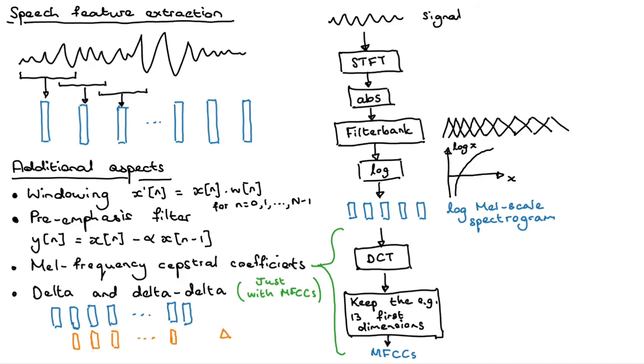These are called delta features because it's basically telling you how the features are changing across time. Sometimes it's called the velocity coefficients because it's basically telling you how quickly you're changing from one vector to the other vector.